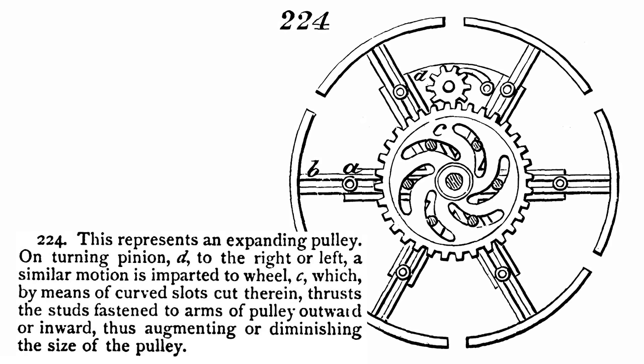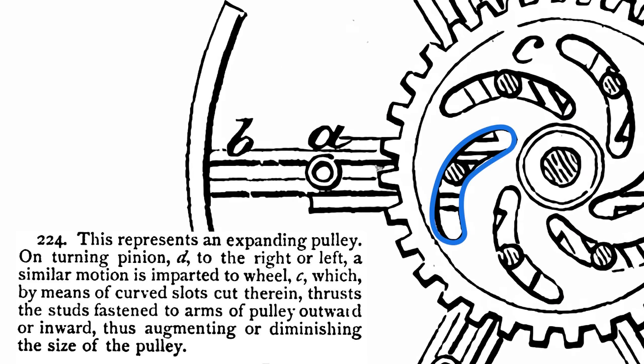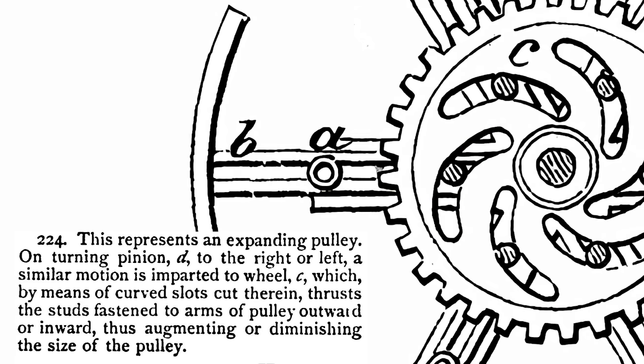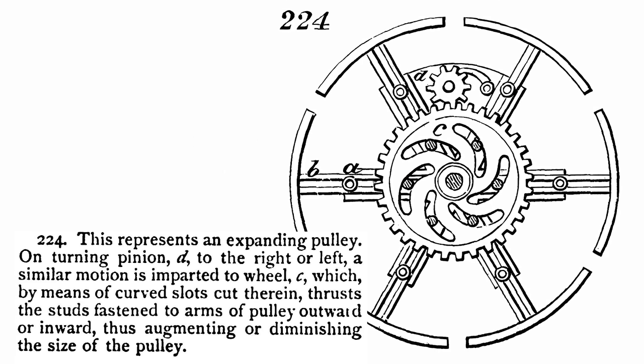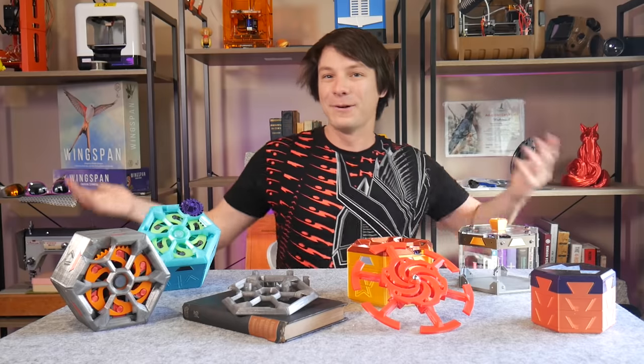To quote the description: 224 represents an expanding pulley. On turning pinion D to the right or left a similar motion is imparted to the wheel, C, which by means of curved slots cut therein thrusts the studs fastened to the arms of the pulley outwards or inwards thus augmenting or diminishing the size of the pulley. Simple right?